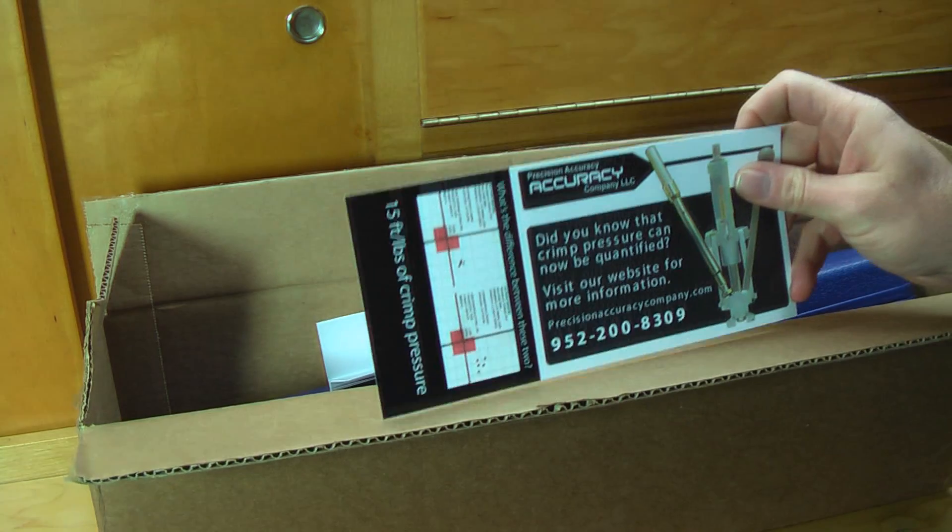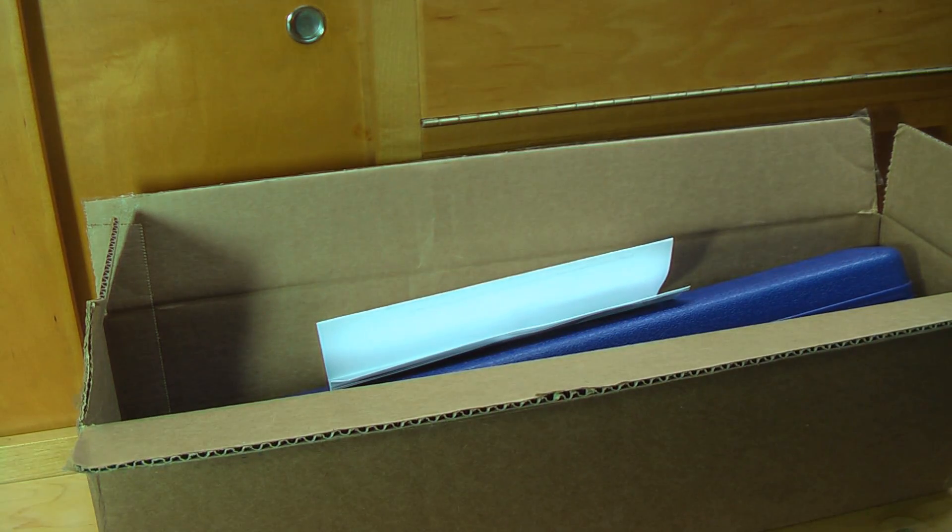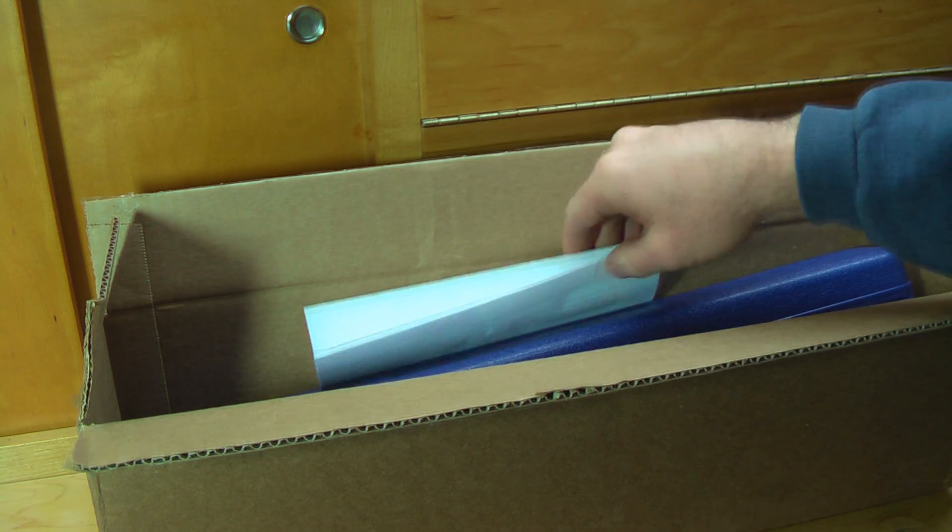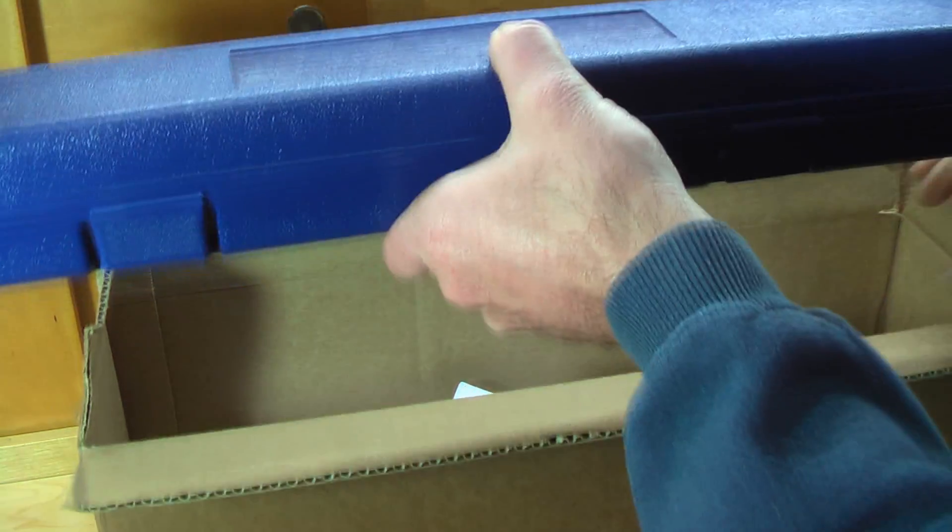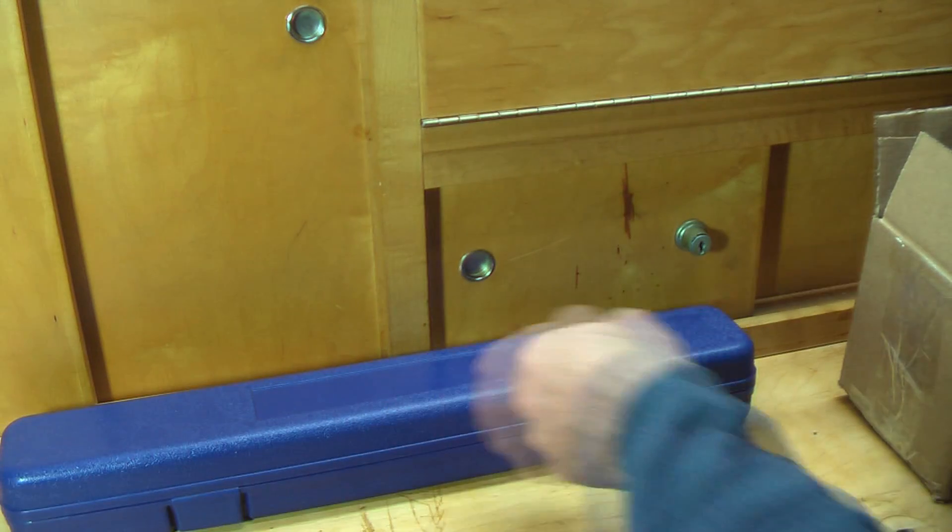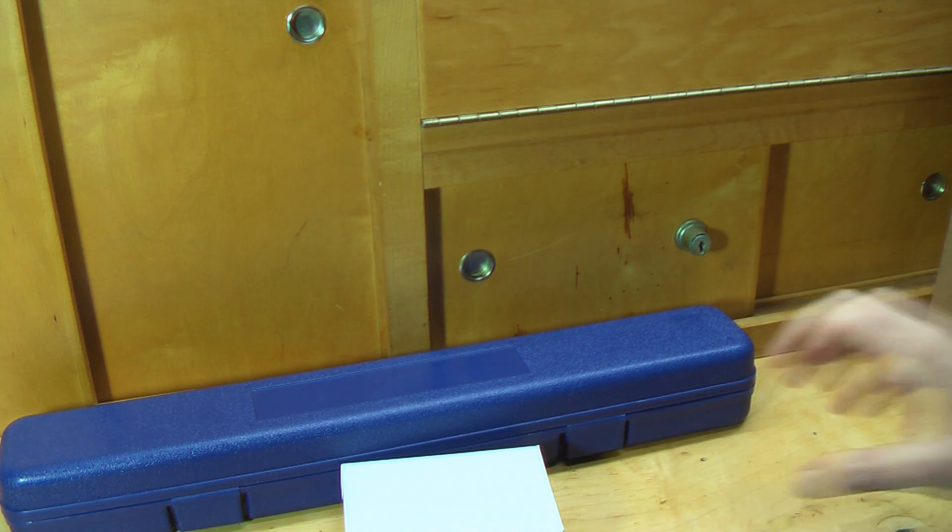What we got is a box from Precision Accuracy Company. What they sent us is two tools: the consistent crimp and a barrel thermometer. Let's go ahead and take a look at them both.